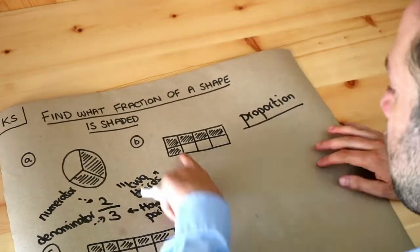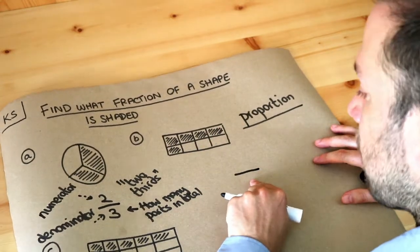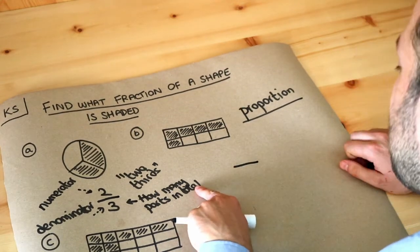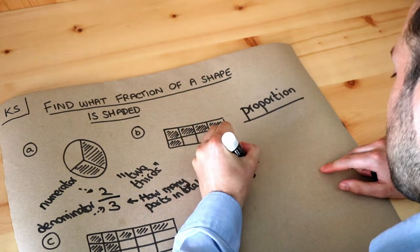What about this next one, B? Well we write a fraction with a horizontal line. Now let's work on the number at the bottom. That's how many parts we have in total, how many pieces we have in total. Well we have one, two, three, four, five, six, seven, eight. So the denominator is eight.